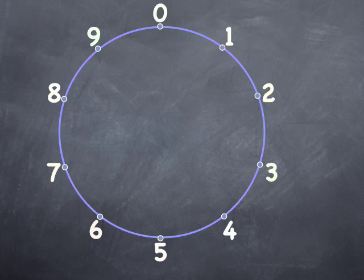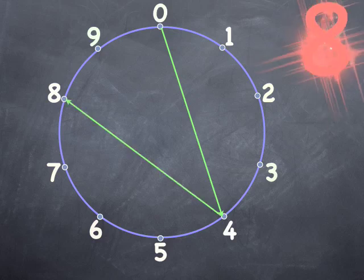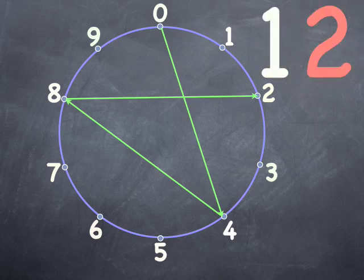Watch as we count by fours. We go from zero to four. When we add four of course we go to eight. Add four more again and we're at twelve. Notice that the last digit is two and the wheel only shows the ones digits which are orange to create the pattern.